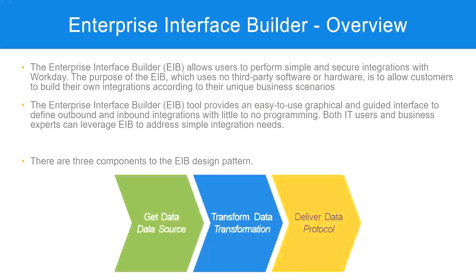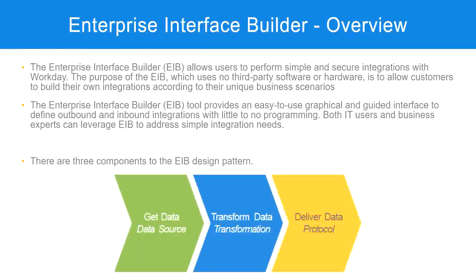When we create an integration using EIB, we will see these three steps: get data, transform data, deliver data. These are the three components in an EIB design pattern. We are going to configure these three steps — where are we going to get the data from? Do we need transformation? If yes, configure that; if no, leave it blank. And then deliver the data — how are we going to send the data to an external system? Once we do these three steps, our EIB is ready and we start exchanging information from Workday with an external system.